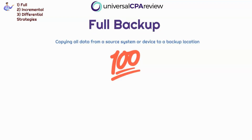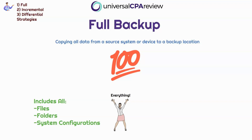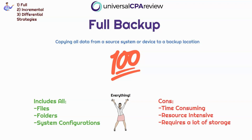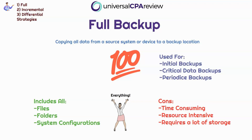First off, full backup. A full backup involves copying all data from a source system or device to a backup location — a full, complete replica of an entire data set, including the files, the folders, the system configurations. Full backups are obviously the most comprehensive coverage, and they simplify the restoration process because all the data is available in one place. However, because it is so comprehensive, full backups can be time-consuming and resource-intensive, especially for large data sets, and they often require more storage space. As a result, full backups are usually suitable for initial backups, critical data backups — copies of the most important or sensitive data within the organization — and periodic backup strategies.